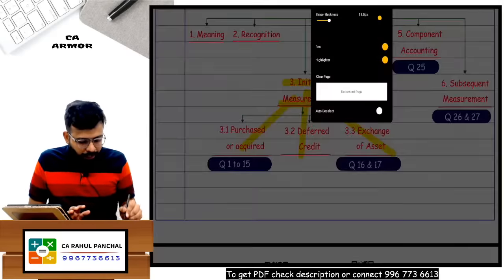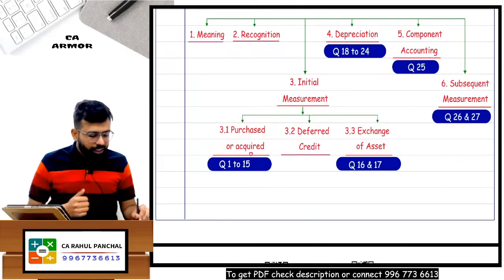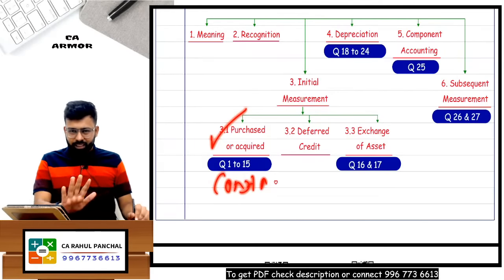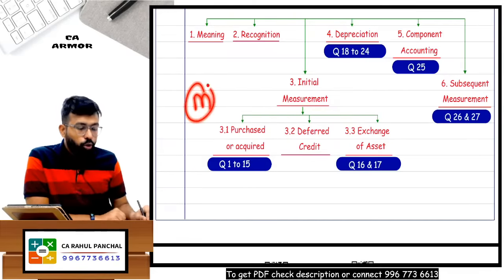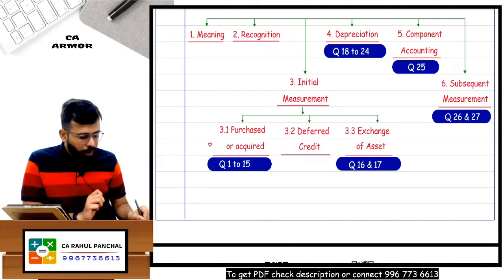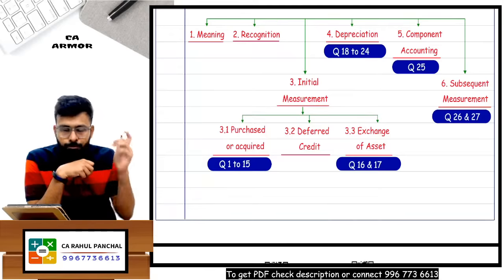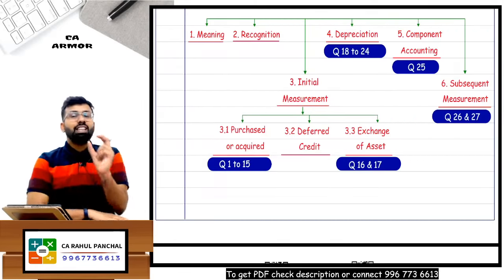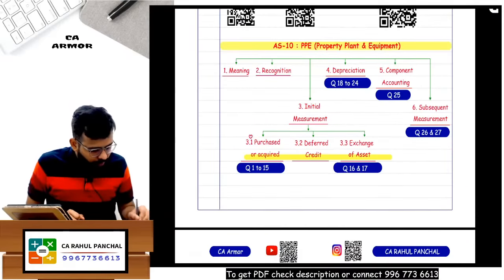There are ways to acquire PPE: you can purchase it (like a delivery van), you can construct it yourself, you can purchase it on deferred credit (EMI basis), or you can exchange through barter. First I will come to depreciation, then I will cover initial recognition. Just wait for these three parts.